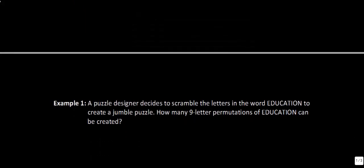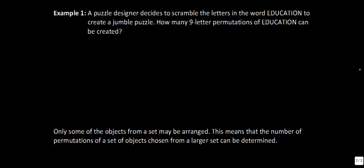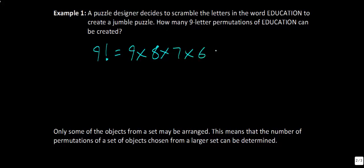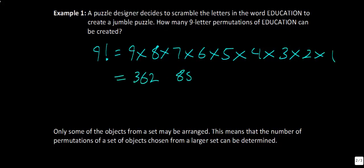A puzzle designer scrambles the word 'education' to create a jumble puzzle. How many nine letter permutations of education can be created? This is straightforward — just like the Kelowna example, we're looking for nine factorial. Many calculators have a factorial button, so you can just compute nine factorial directly. The answer is 362,880.